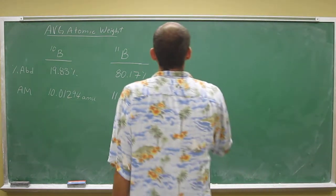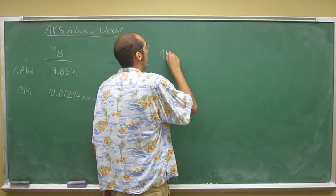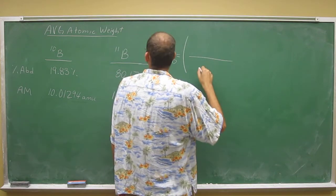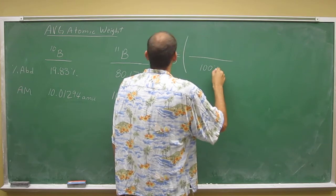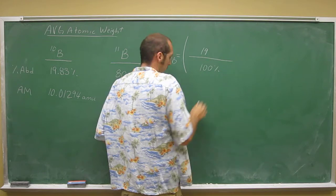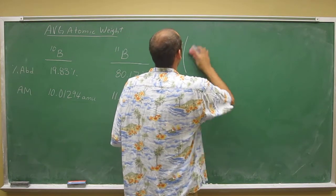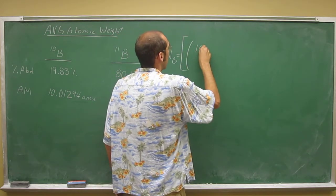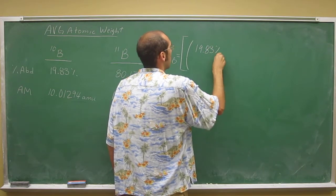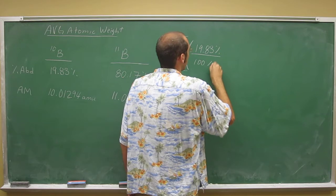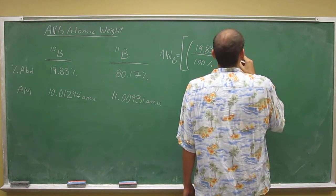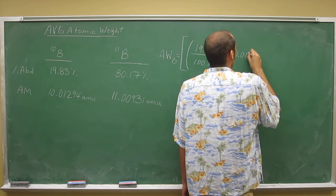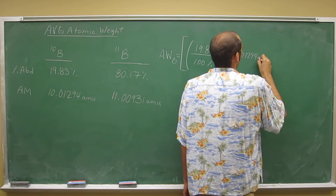let's just do our calculation. So I'll write it down again. The average atomic weight, in this case of boron, we're going to take the decimal of the first. So 19.83% divided by 100% times this really long number: 10.01294 and 1.